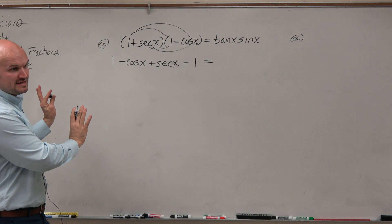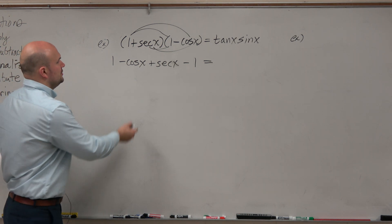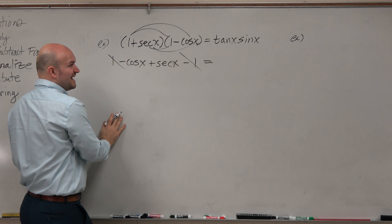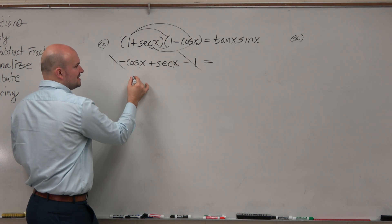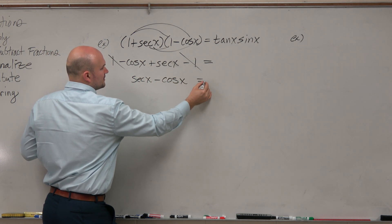So all I did was work on the left side. Didn't change anything, I just expanded it. You can see that 1 and negative 1, those are going to add to 0. I'm going to rewrite this as secant of x minus cosine of x.